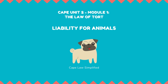Proof of knowledge of the animal's vicious propensity — the onus of which is on the claimant — is called scienter, derived from the Latin word for knowledge. The tort originally involved proof that the defendant knowingly kept a dangerous animal, and such a case is called a scienter action. The following principles govern liability under a scienter action.